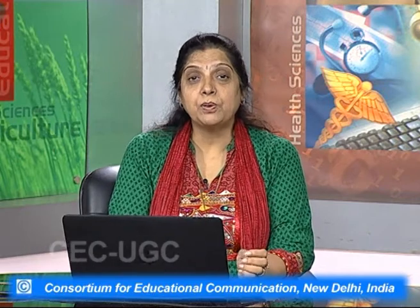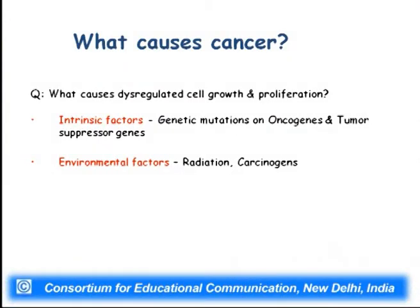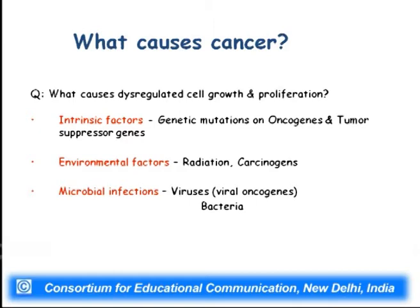What causes this dysregulated growth and cell cycle inhibition? Intrinsic factors are genetic — I have inherited something and my tumor suppressor genes or oncogenes are not correctly expressing. Environmental factors include radiation, chemicals, carcinogens, or viral infections — the most common cause of cancer. Viral oncogenes infecting us will cause cancer. Radiation includes ultraviolet light, X-rays, excessive sunshine, or radioactive elements — all of which are mutagens.